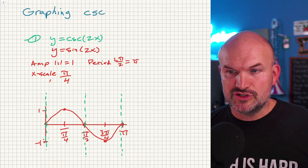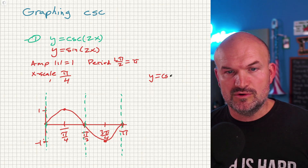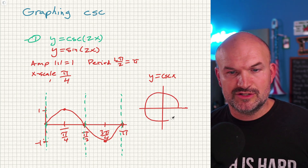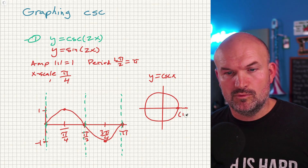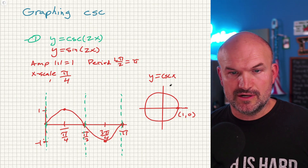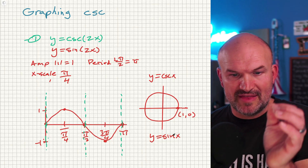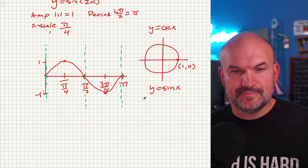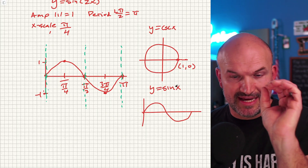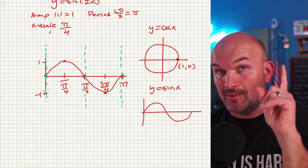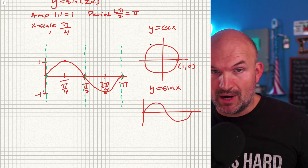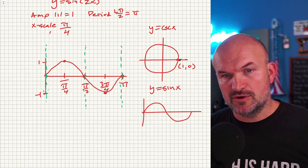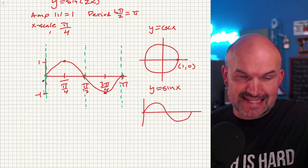Let me show you why this happens. For the cosecant of x with no transformations, look at the unit circle. At angle zero, the point is (1, 0). Sine represents the y-coordinate, which is zero — that's why the parent sine graph starts there. But cosecant represents one over y. When we plug in angle zero, we get one over zero, which is undefined. That's why we have vertical asymptotes at those points.